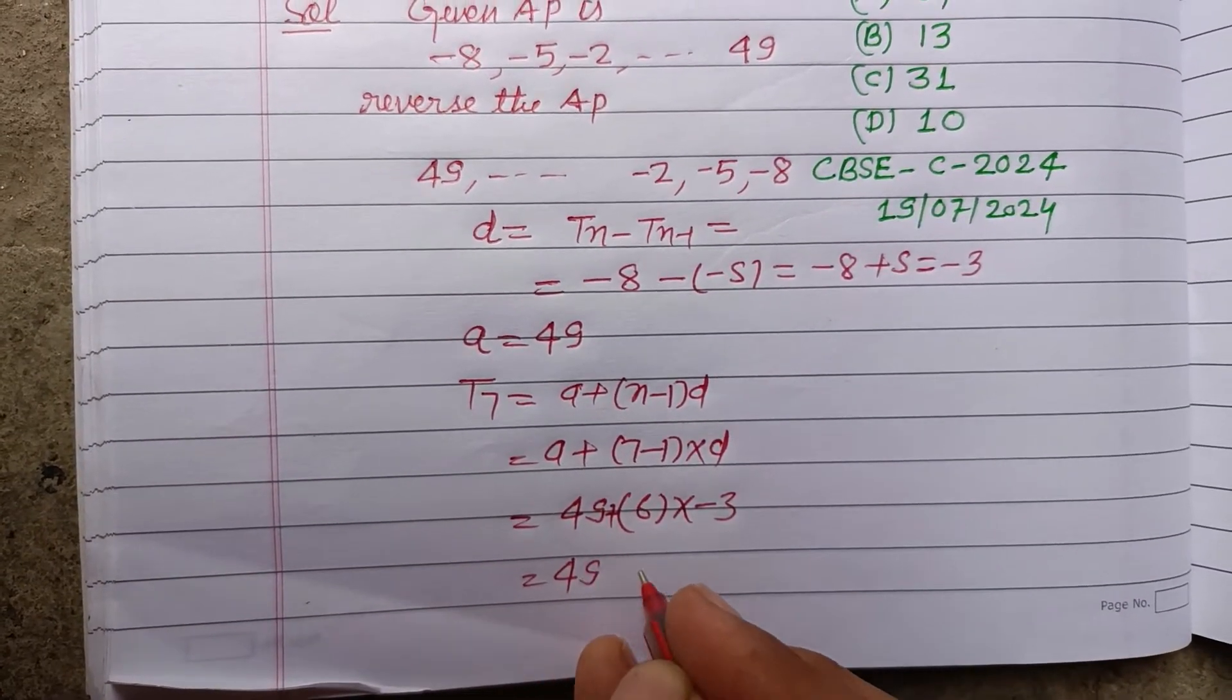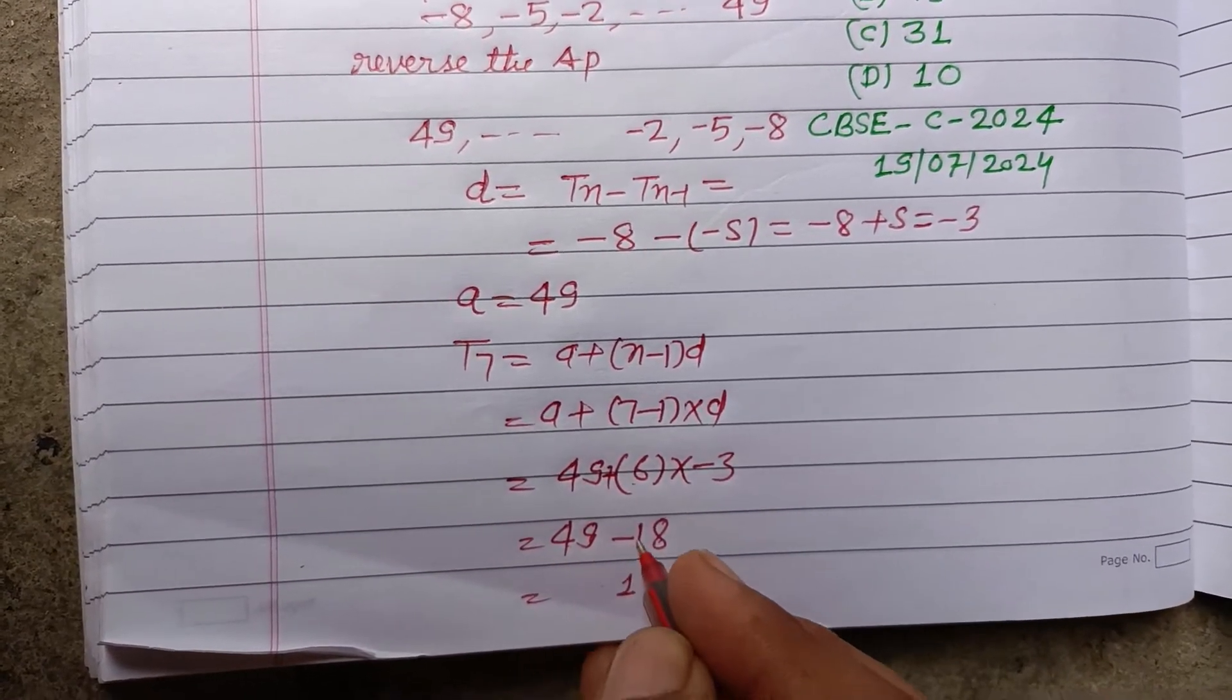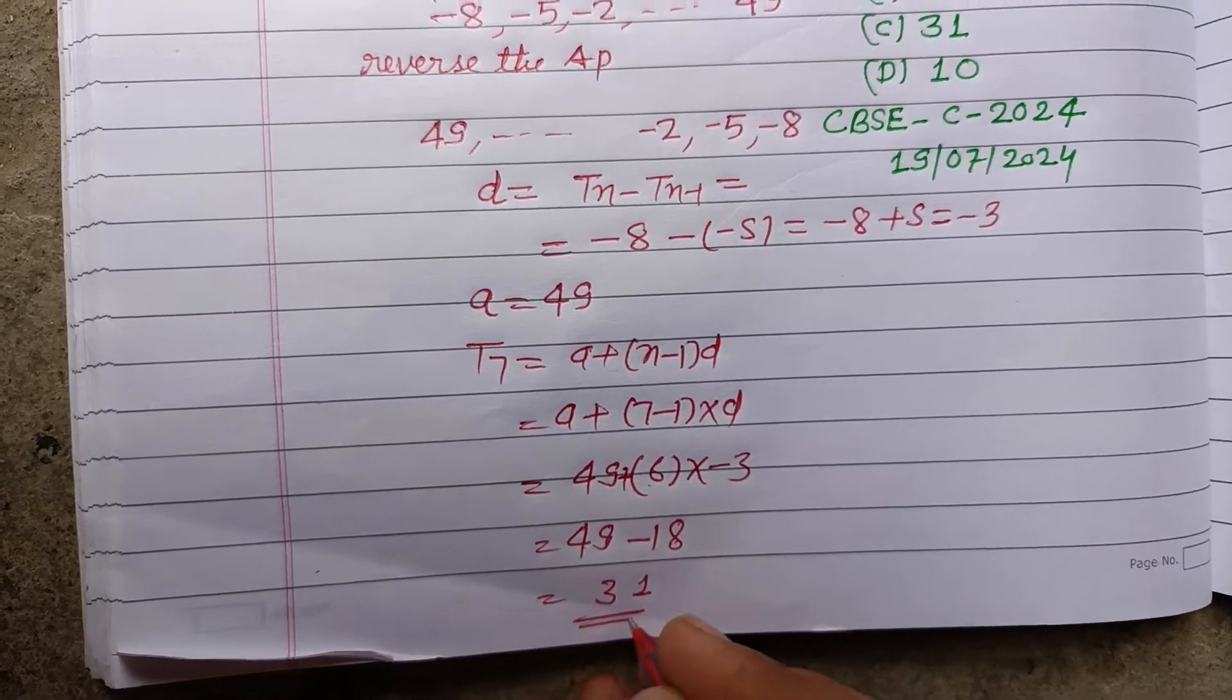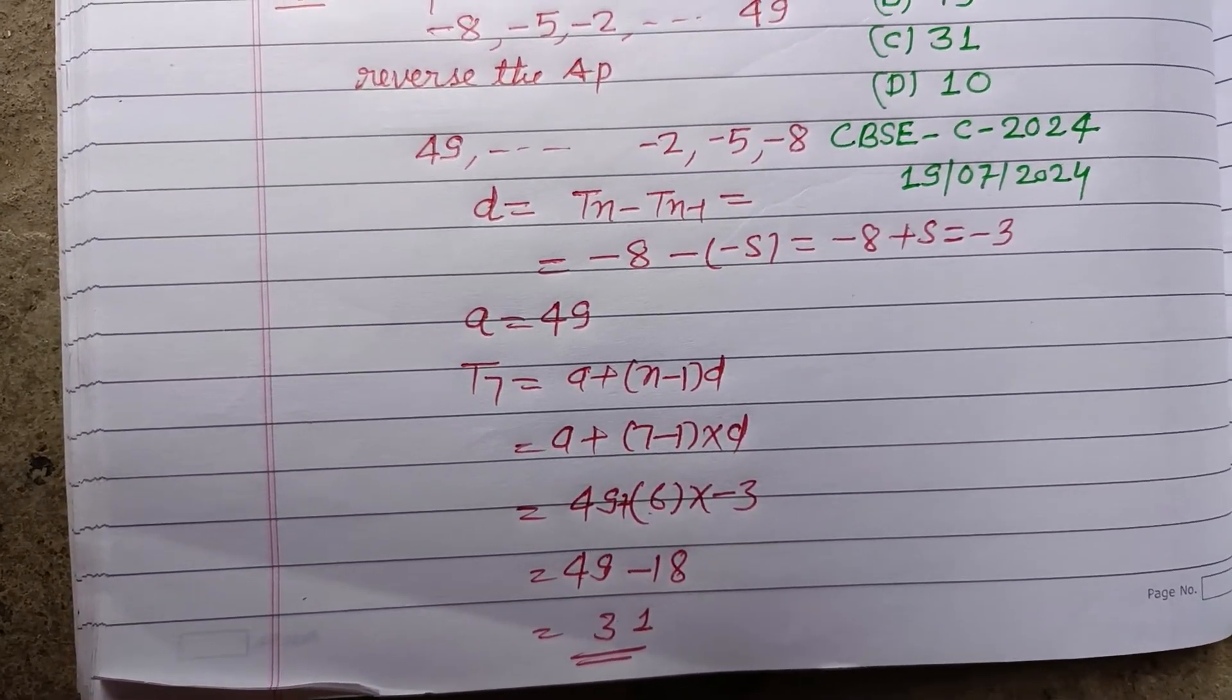So 49, 6 times 3 is 18. So 9 minus 8, this is 1. 4 minus 1, this is 3. So 31 is the 7th term from the end of the series.